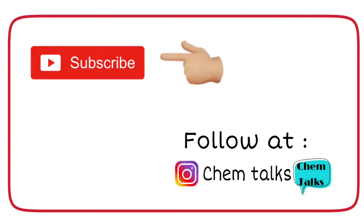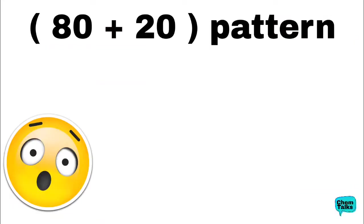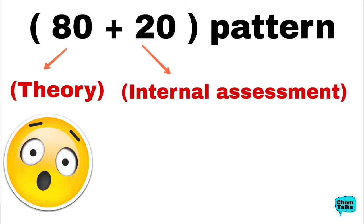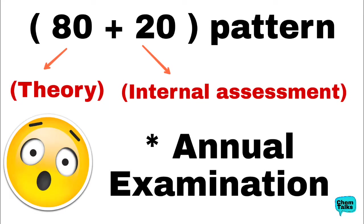The most important thing to discuss here is what the pattern is going to be. This year's pattern will be 80 plus 20 — that is the marks weightage, total 100 marks. There will be a division of 80 plus 20. 80 marks is for your theory exam and 20 marks will be assigned to you by internal assessment criteria. The annual examination will be held at the end of the year — one exam that will judge your progress and how much you have learned, and on the basis of those marks you will be allotted 80 marks.